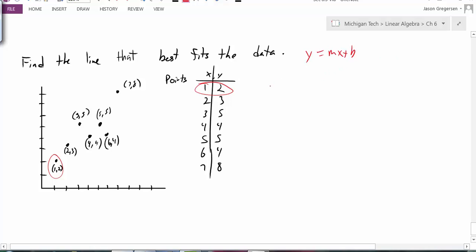In other words I should be able to take m times my 1, there's my x value, plus b. And I should get my y value, my y value of 2. And if (2, 3) was a point on my line, then I should get m times 2 plus b is equal to 3.